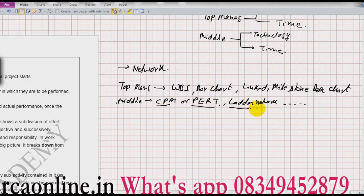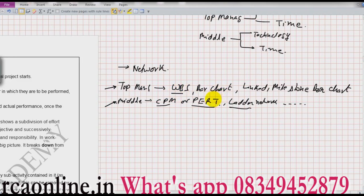For most of the time we will concentrate on CPM, PERT, and ladder network. Day-to-day activities are monitored by the middle management, and some broader monitoring — like weekly, monthly, or quarterly — is done by top management. They deal with the project as a whole, while middle management handles day-to-day activities. So the charts and networks will be different. I will first discuss WBS, bar chart, linked chart, and milestone chart and their limitations, which are not good for middle management, who therefore use CPM and PERT.